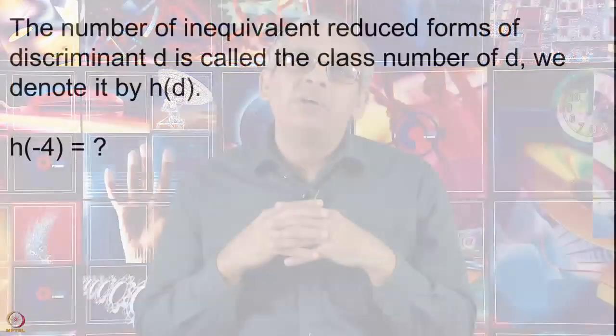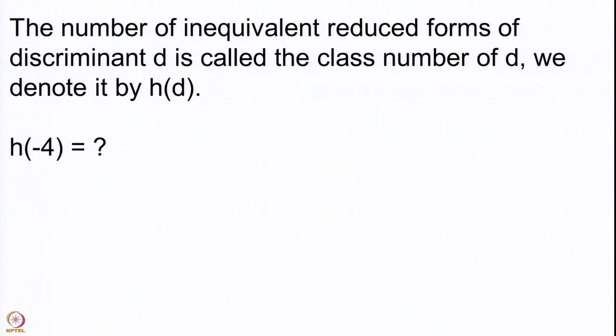Given any such negative number there is a certain field extension of the rationals associated to it, and there is a quantity called the class group associated to this field extension. This class number that we are going to compute happens to be the cardinality of the class group. The order of the class group, defined in a slightly non-trivial way, can be computed easily simply by looking at the number of inequivalent reduced forms of discriminant d. We denote it by h(d).